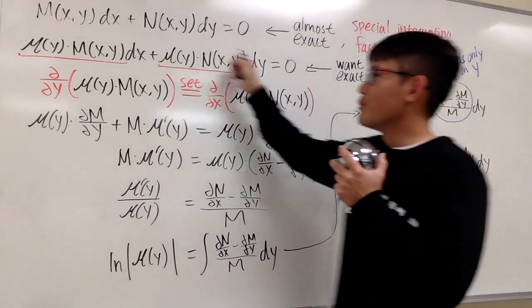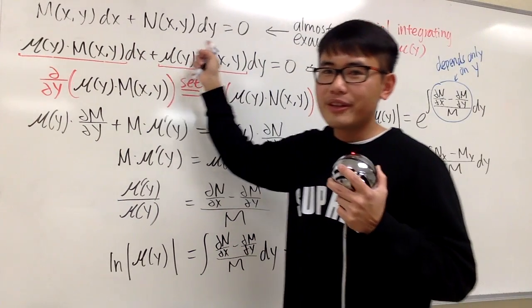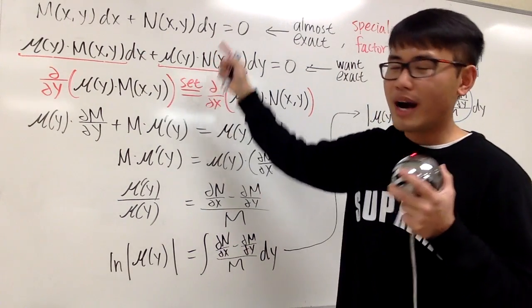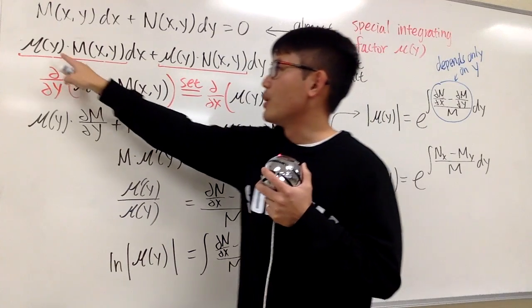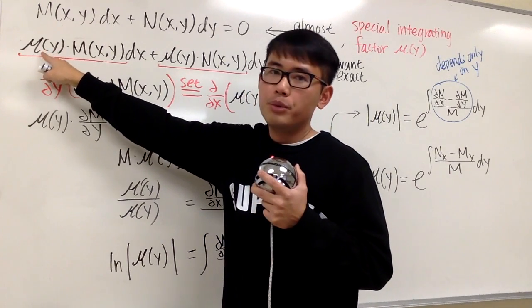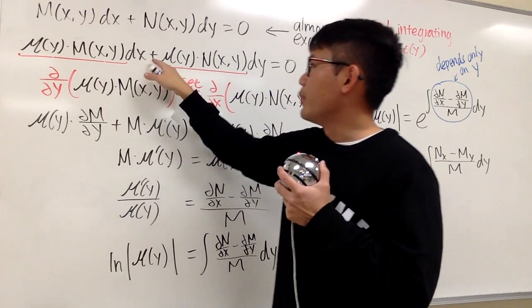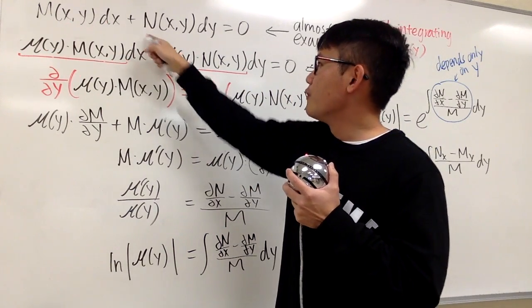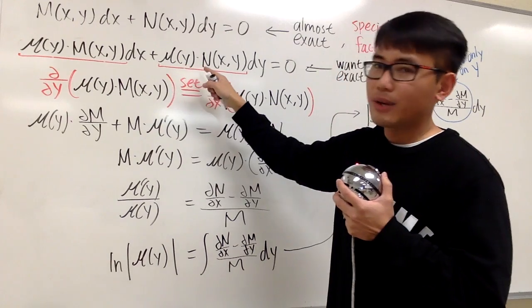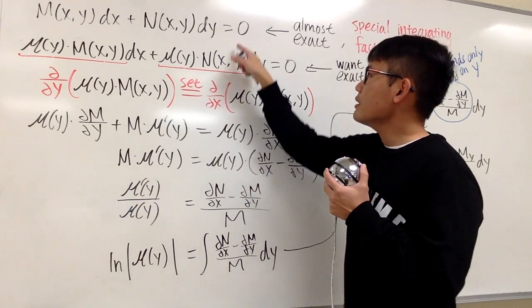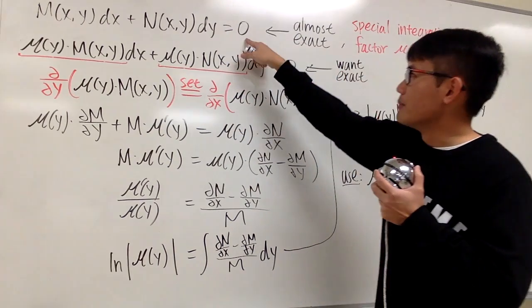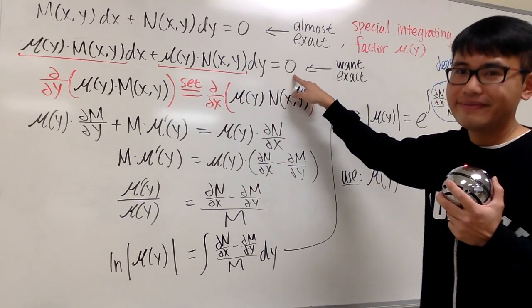First, we are going to multiply everything right here by mu of y. So you see, that's what I did right here — mu of y times this term, and we add it with mu of y times that. And mu of y times 0 is still 0.